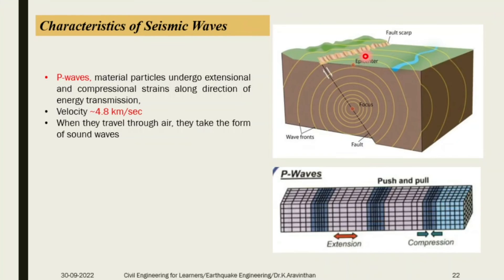When the wave travels from the fault area and focus, it travels in the form of push and pull. It is the fastest wave among the four wave types. Primary waves are the fastest waves. When an earthquake is going to occur, if you are in a building and it is pushing and pulling, you should understand that there is an earthquake going to happen and act accordingly. It travels at a speed of 4.8 km per second, which is more than the speed of sound.